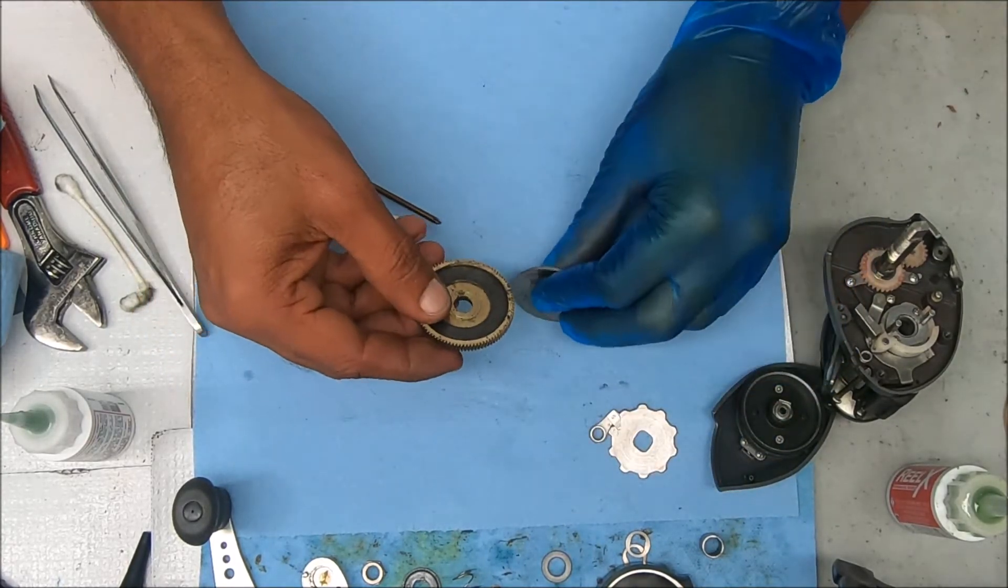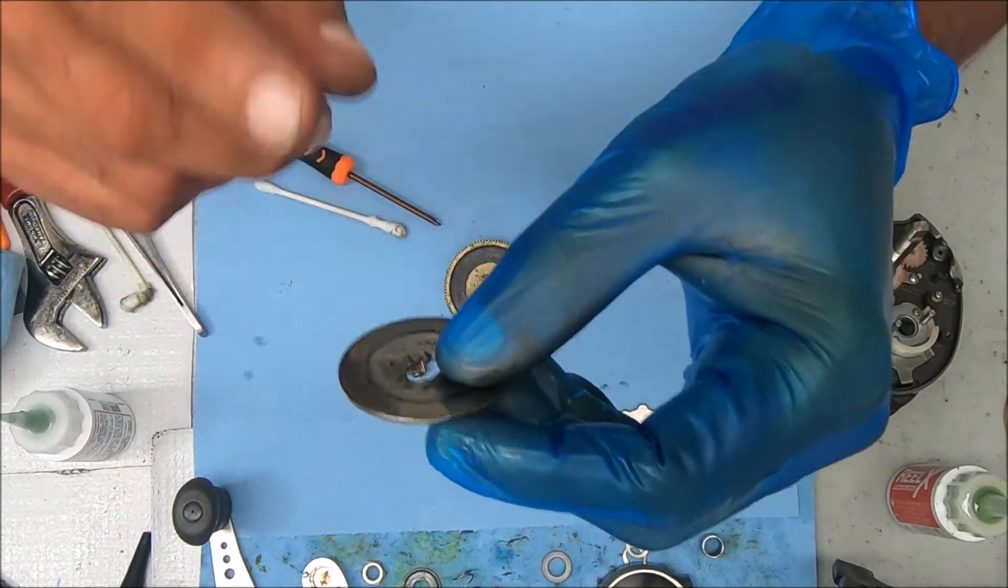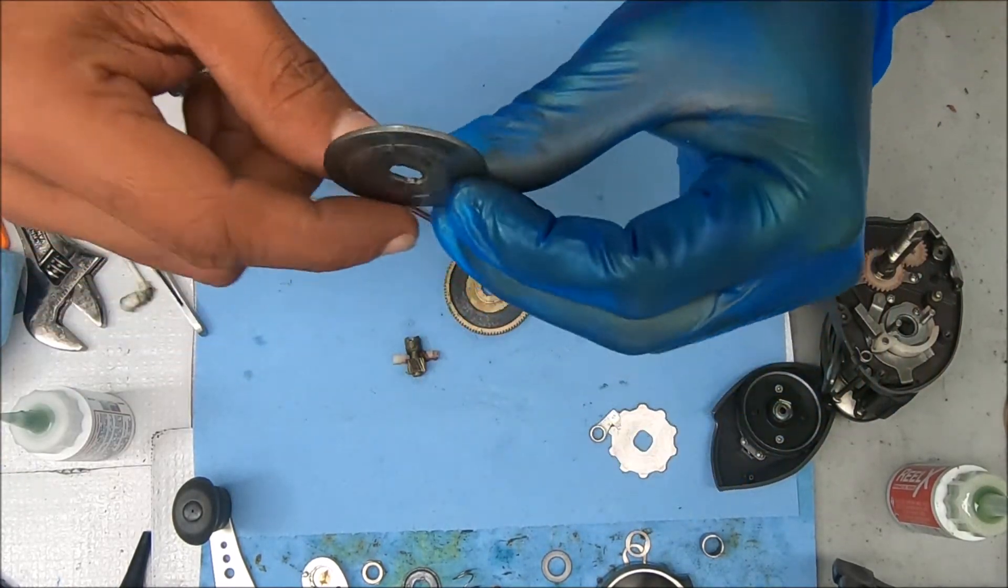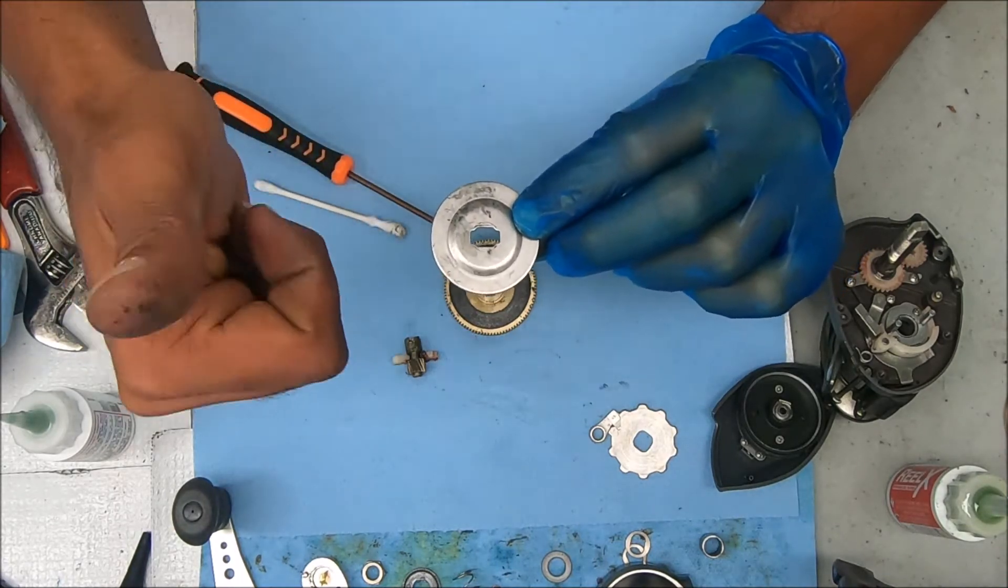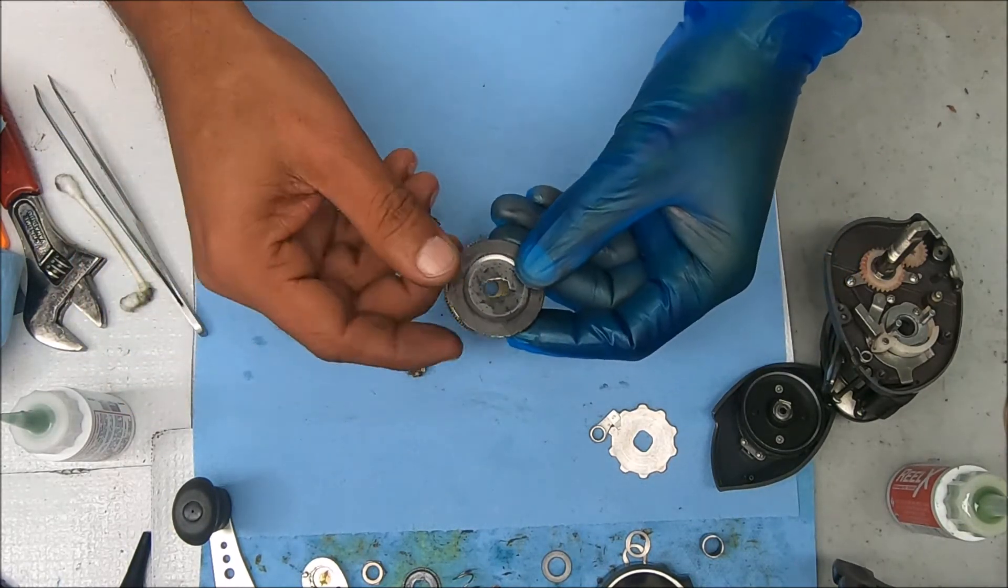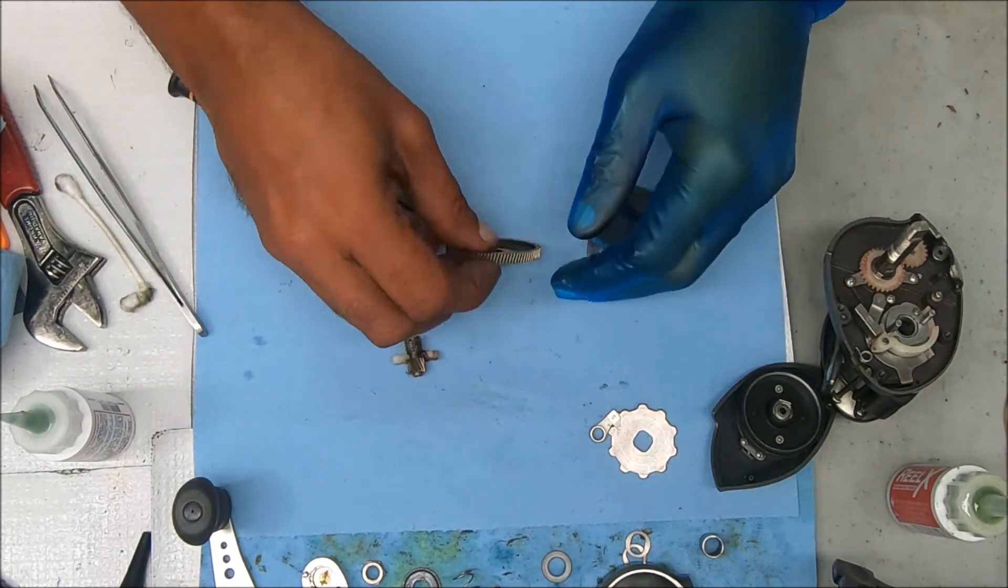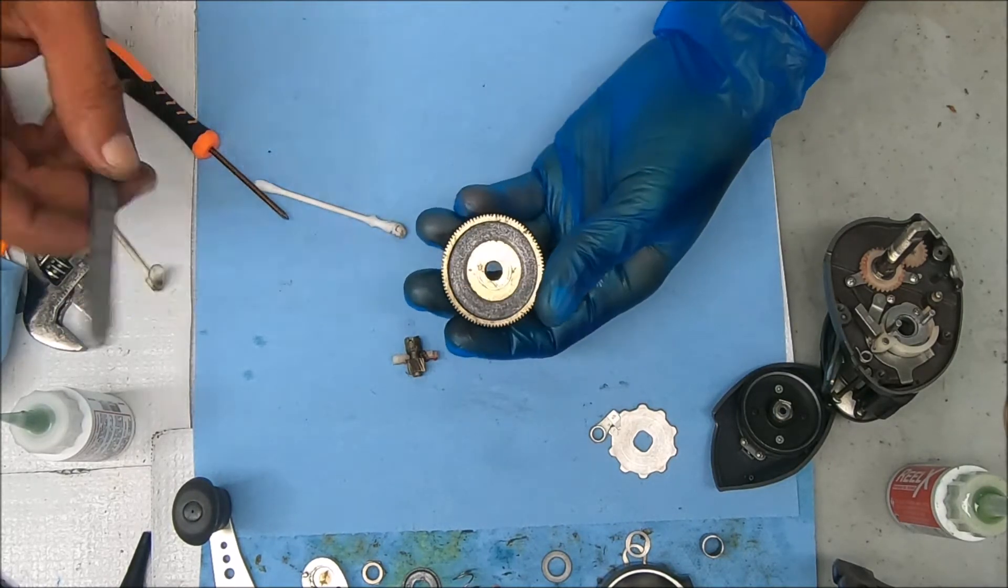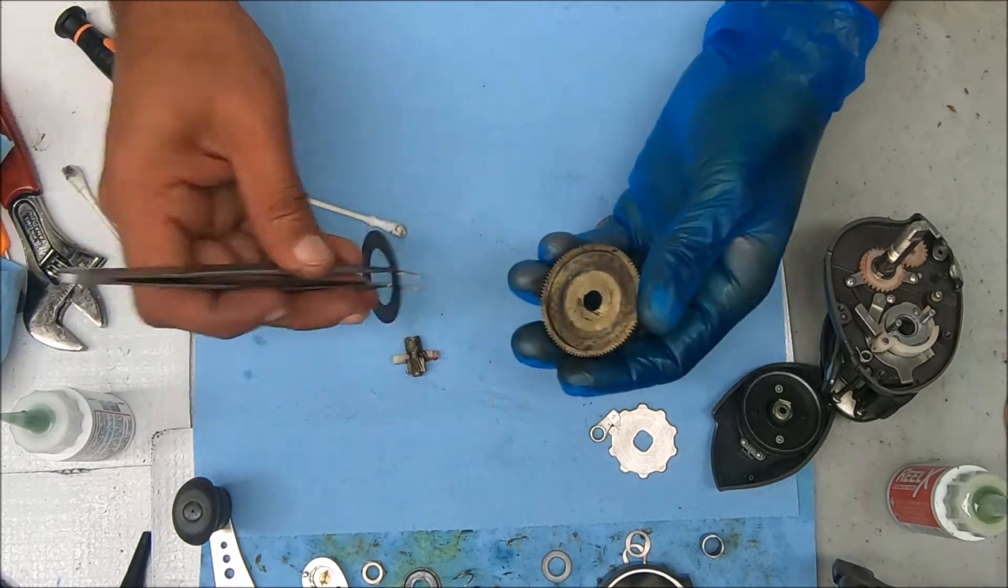Now we can just get to the drag. You have this plate, the drag plate. Notice there's a curved end. That curved end is going to be facing upwards, not downwards like that. Just so you know when you reinstall it. Let's see if we can pop this out. That's nice.